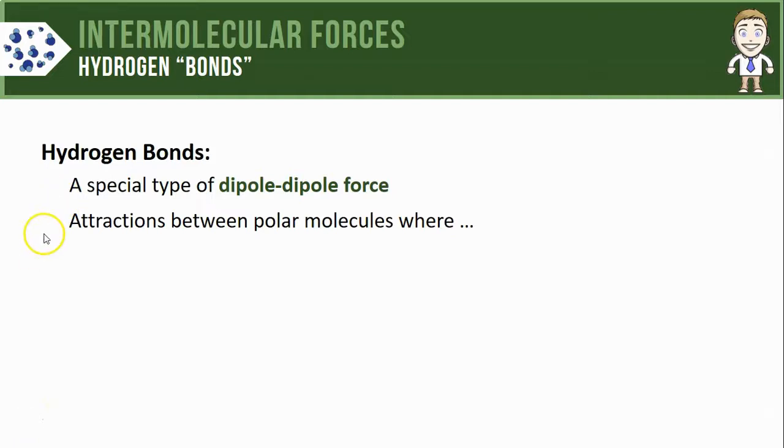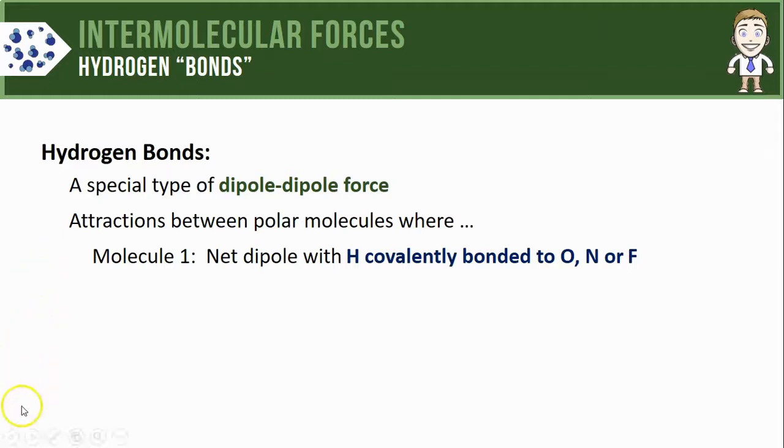The first qualification for hydrogen bonds says that one of the molecules has to have a net dipole, which means it has to be polar, but it also has to contain a hydrogen atom that is covalently bonded specifically to oxygen, nitrogen, or fluorine. The second molecule also has to have a net dipole, but this time it doesn't need a hydrogen, it only has to contain oxygen, nitrogen, or fluorine.